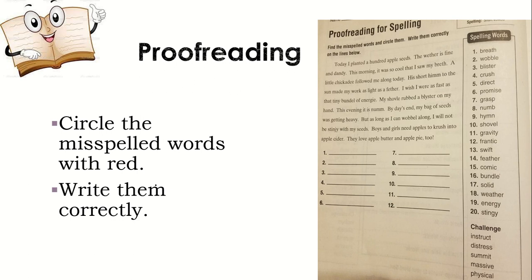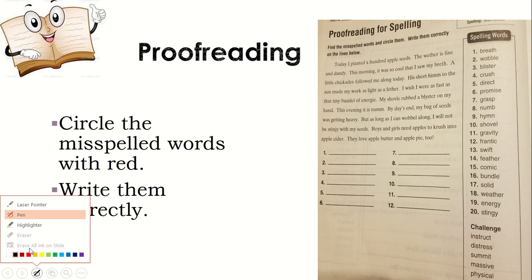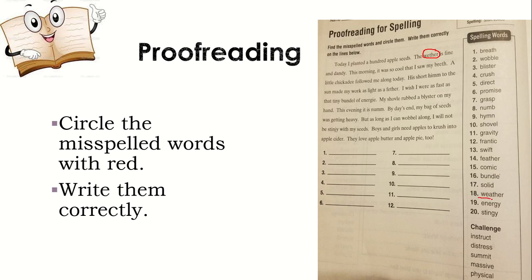Today, I planted 100 apple seeds. The weather. Pay attention right there. The word weather is misspelled. So I want you to circle with red the word weather. And you will locate in the list how to write the word weather. And it's number 18. So you will write weather on number one. Write the word weather. W-E-A-T-H-E-R. Weather.